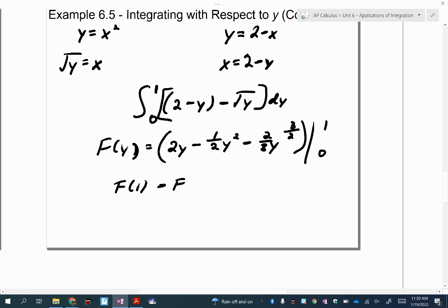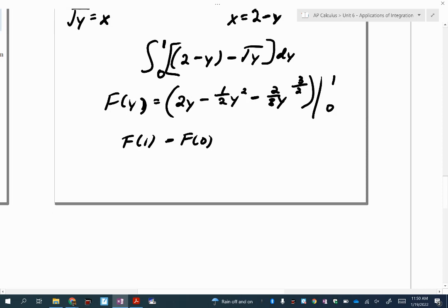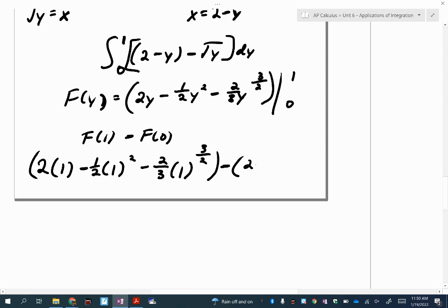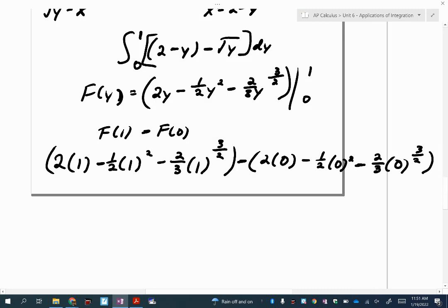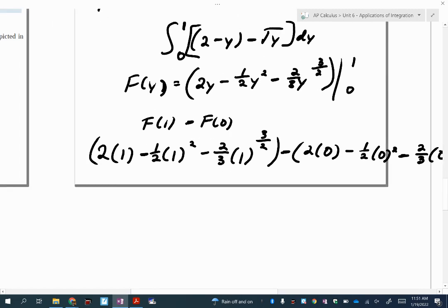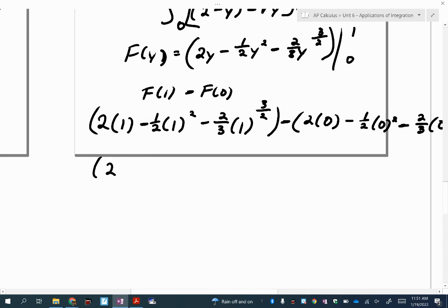So f of 1 minus f of 0. Feel free to go to decimals if you want. I'm going to do the algebra here. So 2 times 1 minus 1 half times 1 squared minus 2 thirds times 1 to the 3 halves power. So all of that minus 2 times 0 minus 1 half times 0 squared minus 2 thirds times 0 to the 3 halves power. Again, you'll probably notice that all that's going to become 0. So just focusing on essentially f of 1. So that's 2 minus 1 half, and then that's going to be minus 2 thirds.